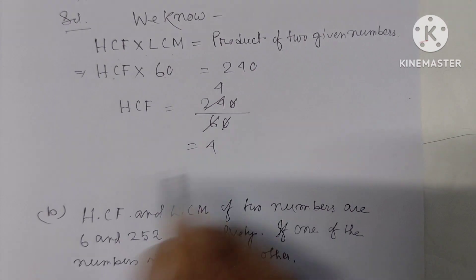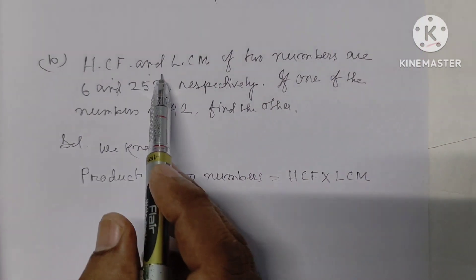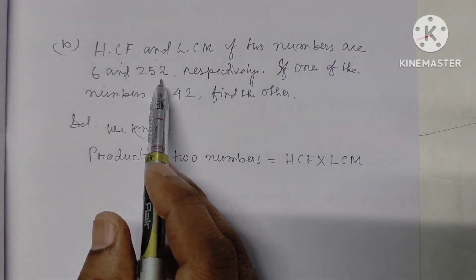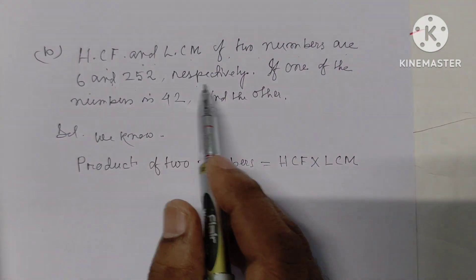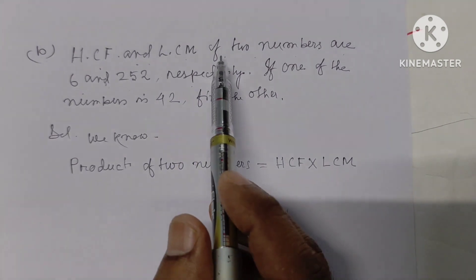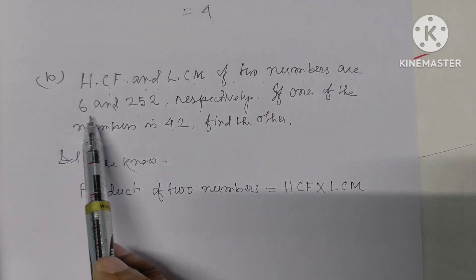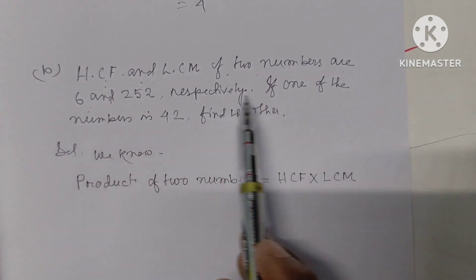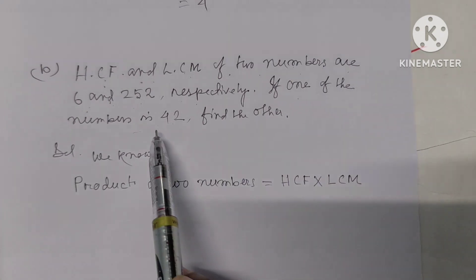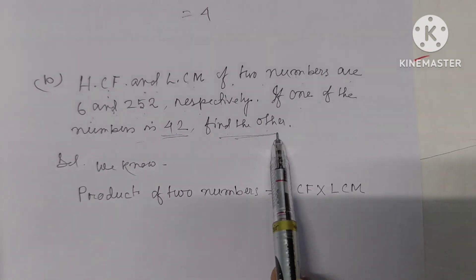Next problem: the HCF and LCM of two numbers are 6 and 252 respectively. If one of the numbers is 42, find the other number.